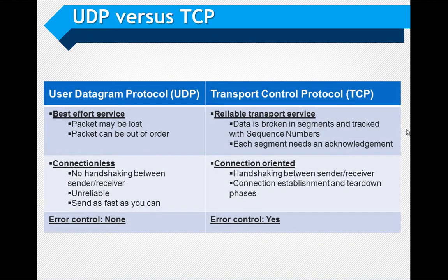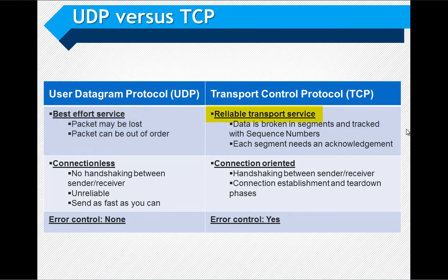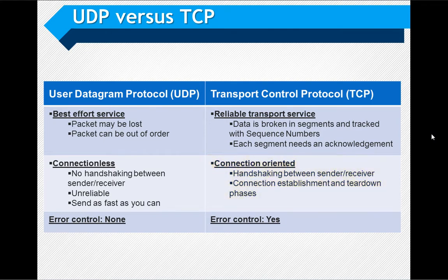There are two Layer 4 protocols: UDP and TCP. UDP is the unreliable protocol — packets are sent and not acknowledged. TCP, on the other hand, is a reliable protocol where each data segment needs to be in order and acknowledged by the receiver. With TCP, a connection needs to be established between the client and the server before starting a TCP transfer, so it's a connection-oriented protocol.